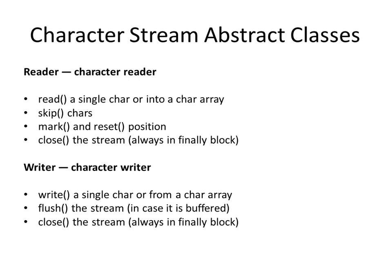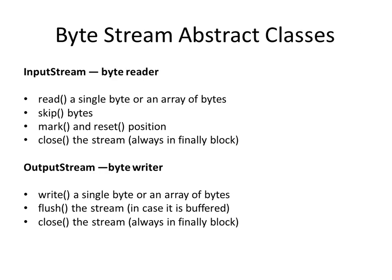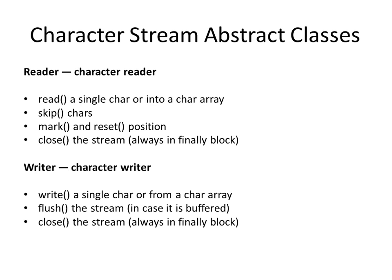For character streams, the abstract classes are Reader and Writer, and they all have similar methods. The Reader has read, skip, mark, reset, and close. The Writer has write, flush, and close. Comparing to the byte stream abstract classes, the methods are quite similar — the only difference is that byte streams deal with bytes while character stream abstract classes deal with characters.